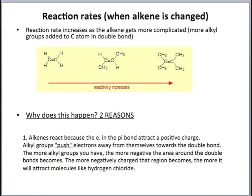How about reaction rates if we change the alkene? The reaction rate will increase as the alkene gets more complicated — meaning more alkyl groups are attached to the carbon atoms of the double bond. So going from two methyl groups to four methyl groups, for example, reactivity increases across that range.